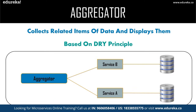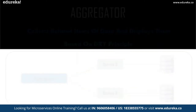For example, if you have two services — service A and service B — you can individually scale the services simultaneously by providing data to the composite service. So that was about the aggregator design pattern. Whenever a client requires specific information from two or three services, you can go forward with this aggregator design pattern.